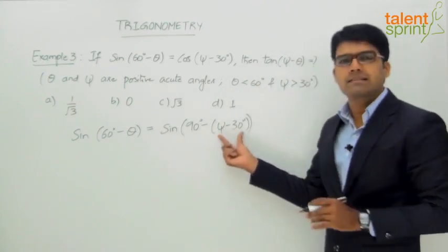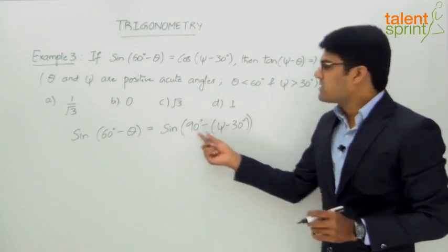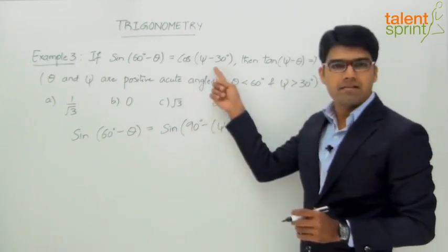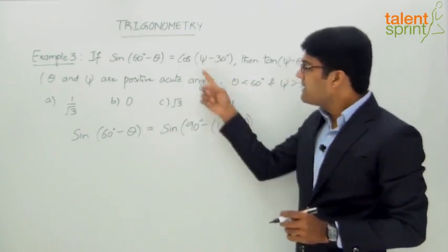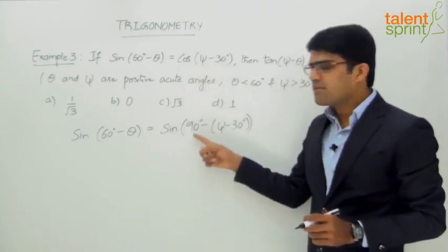...ψ - 30 degrees is one variable here. So sin(90° - x) = cos(x). Going by that, we can say cos(ψ - 30°) = sin(90° - (ψ - 30°)).